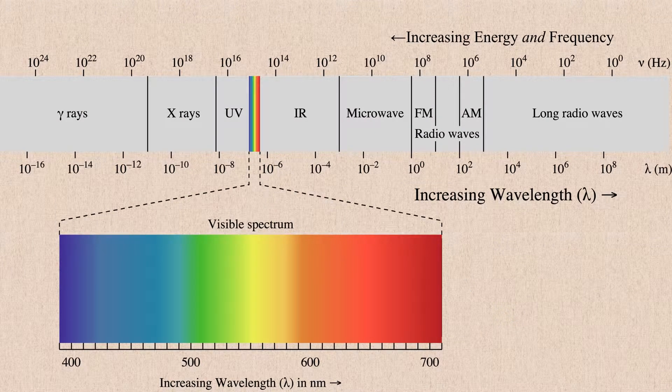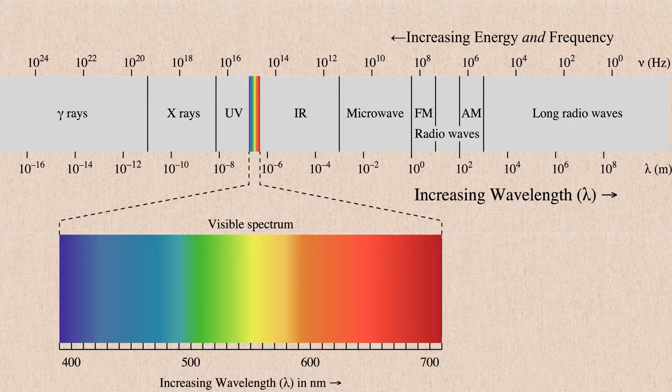So when we look at our electromagnetic spectrum, we see a representation not just of wavelength going from the shortest wavelengths on the left to the longest wavelengths on the right, but we're also seeing a representation of frequency going to the shortest frequencies on the left and the longest frequencies on the right and increasing energy.